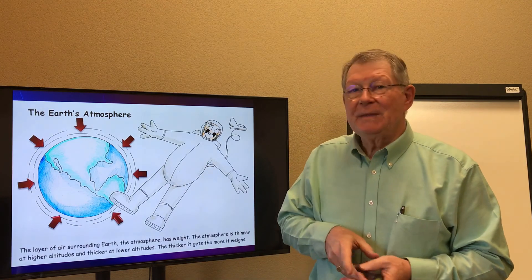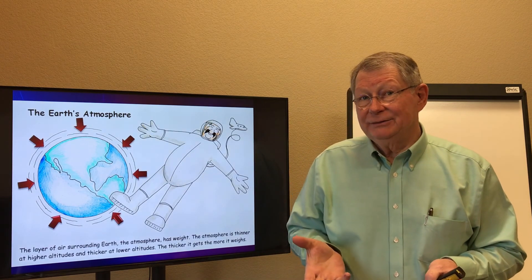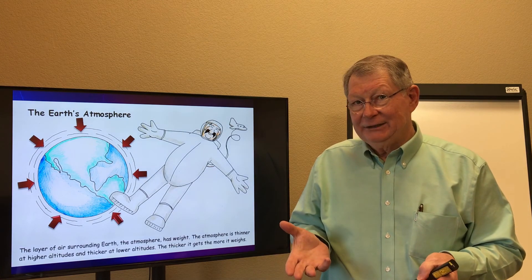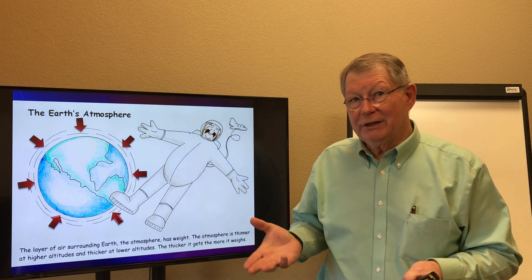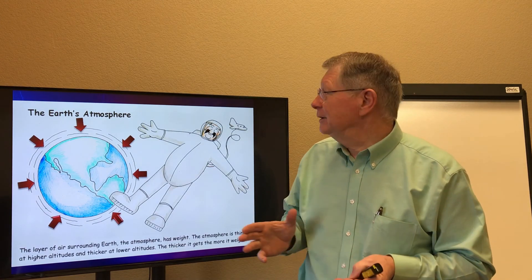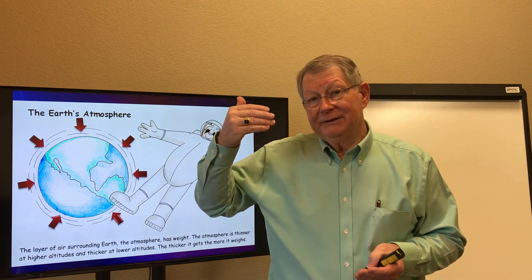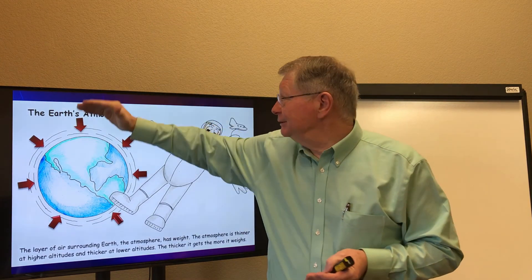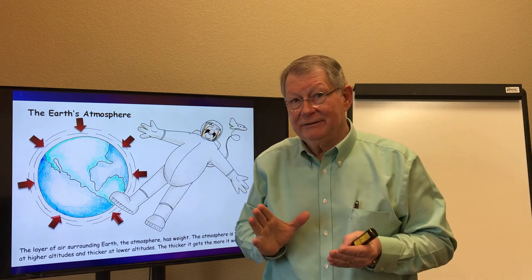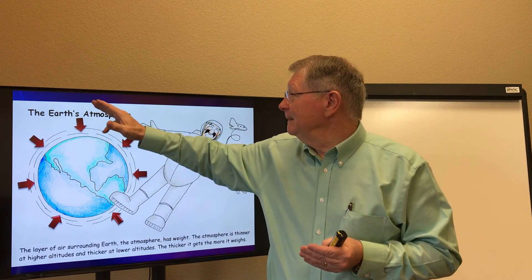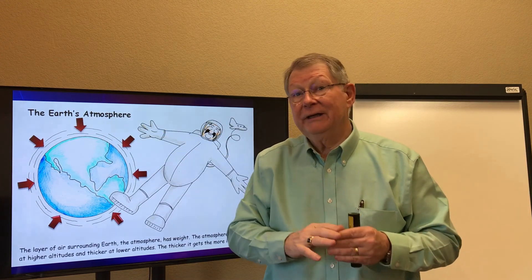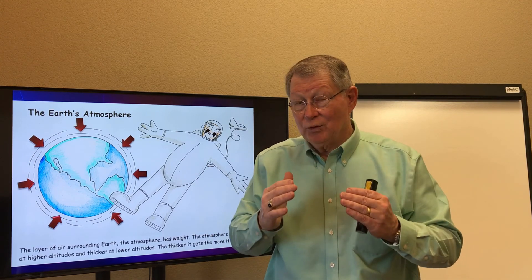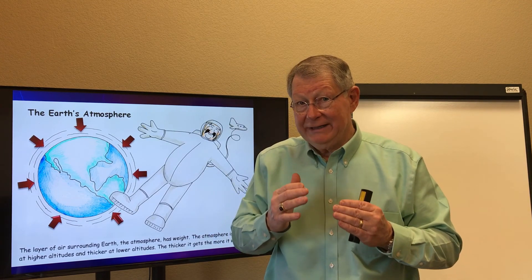The first thing we need to understand is that air has weight. It has pounds per square inch — it creates pressure on the earth. As our altitude increases, the air is thinner and has less weight. As we get closer to the earth, the air is thicker, more dense, and we have more weight — more pounds per square inch. It's an important element.